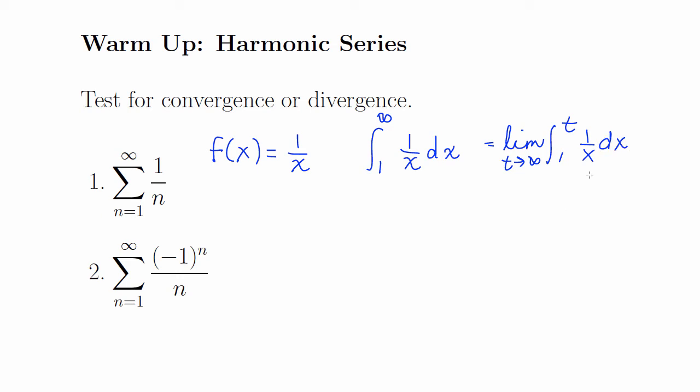The antiderivative of 1 over x is ln absolute value of x. We find the limit as t approaches infinity.